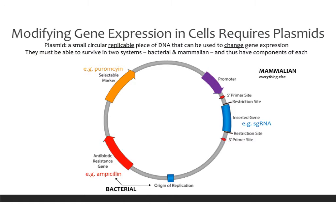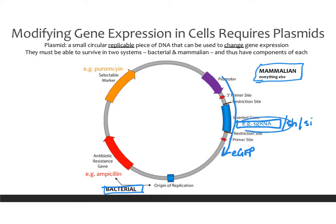Any of these modifications will require plasmids — small circular pieces of DNA that have the necessary components to change gene expression. They have to be able to survive in two systems: bacterial, because we expand them in bacteria as our factory for making more plasmid, and mammalian, which contains the expression vector you're interested in. Your sgRNA, shRNA, or siRNA is inserted into the plasmid, and you can also tie an eGFP or fluorescent marker into the promoter system so that when your modification is being expressed, you also have GFP output, allowing you to check under a microscope that your plasmid has incorporated properly.